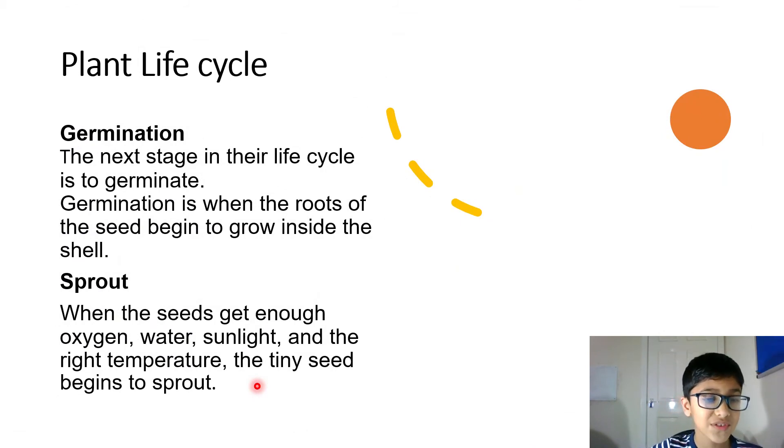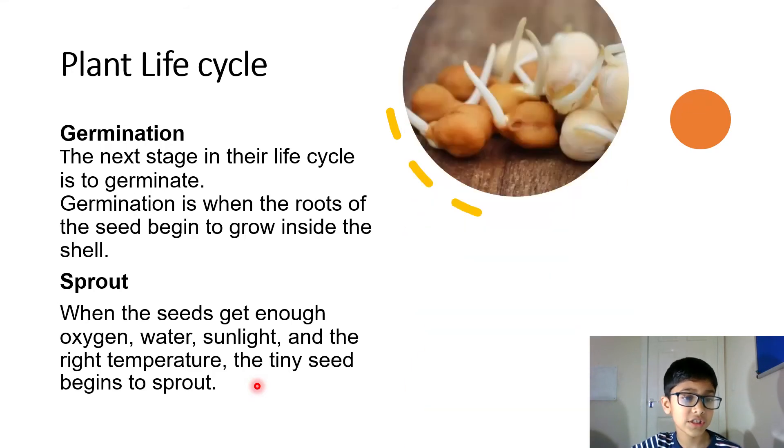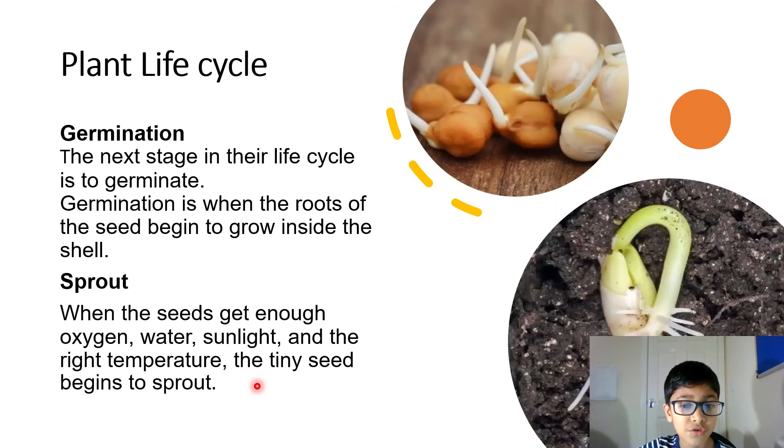Plant life cycle. Germination. The next stage in the life cycle is to germinate. Germination is when the roots of the seeds begin to grow inside the shell.